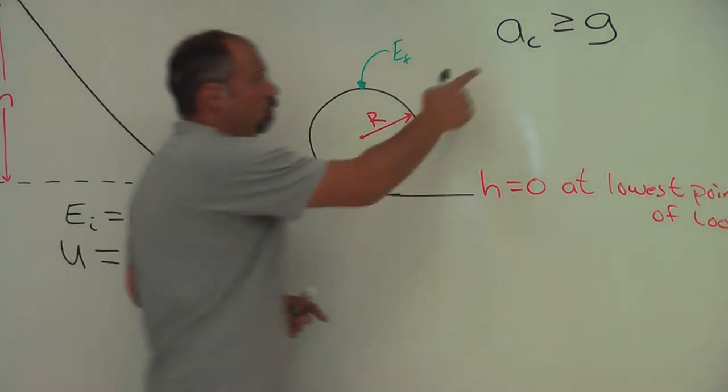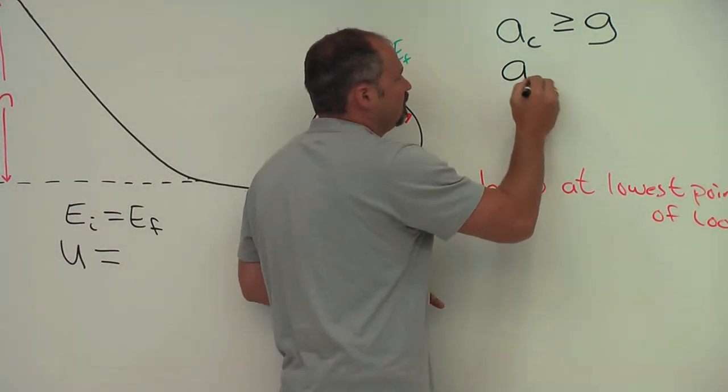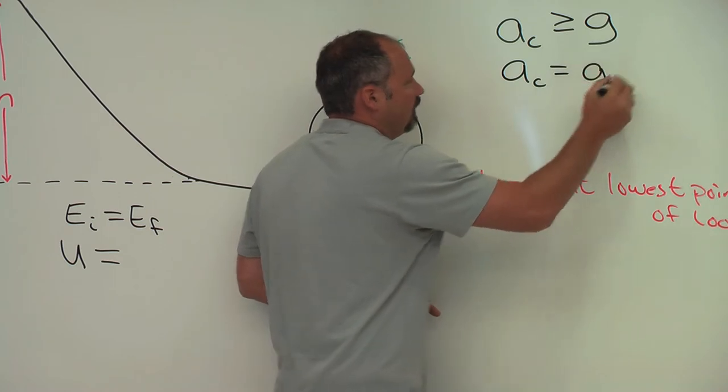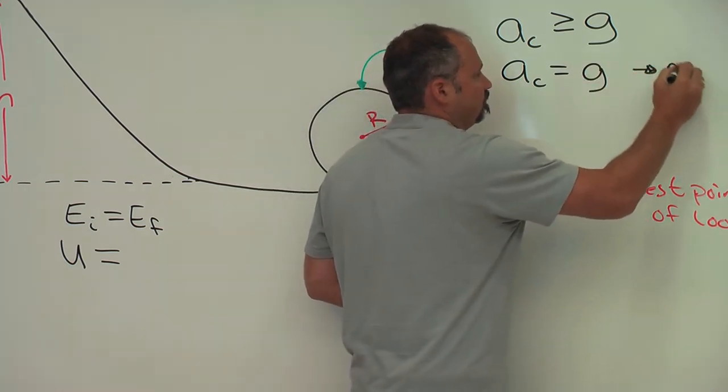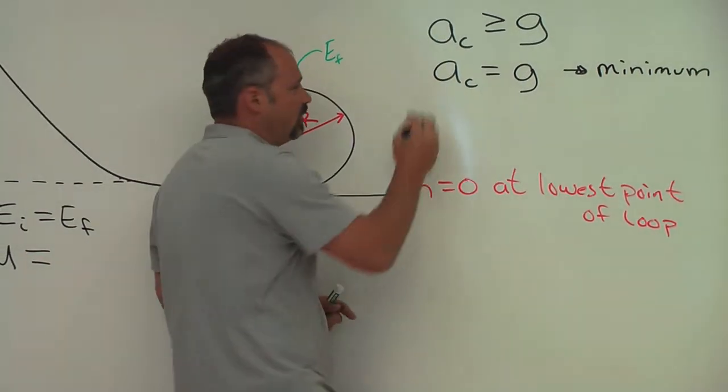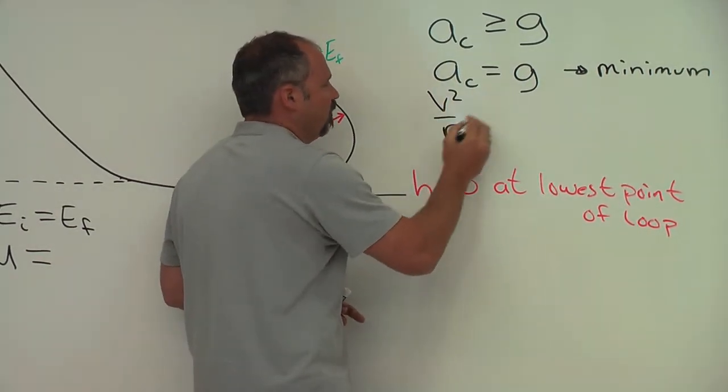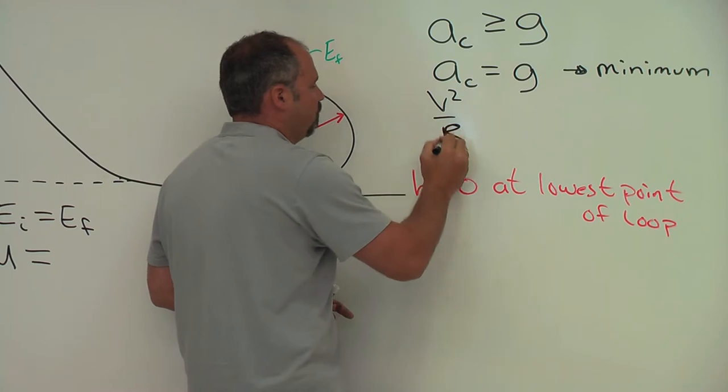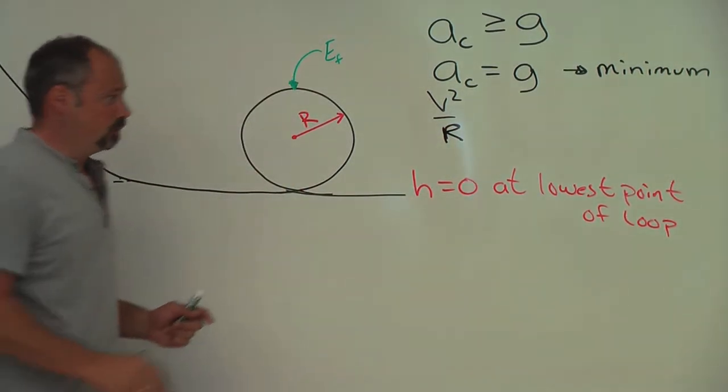To find the minimum height, we'll put in the minimum centripetal acceleration. And centripetal acceleration is just v² over R, capital R, for the radius of the loop.